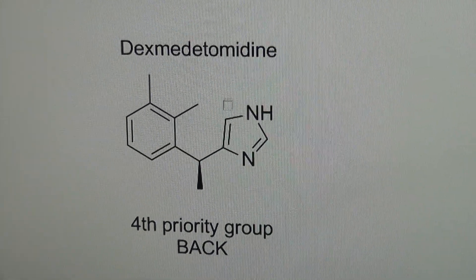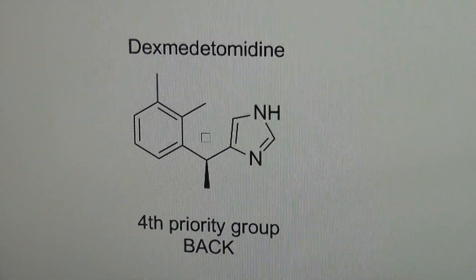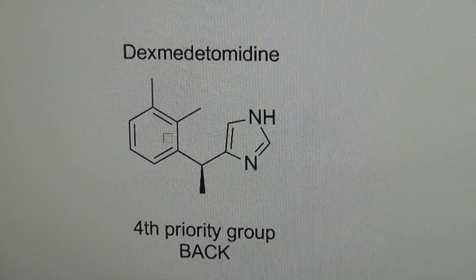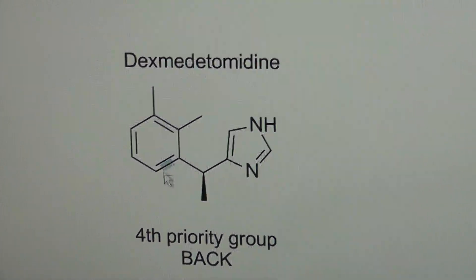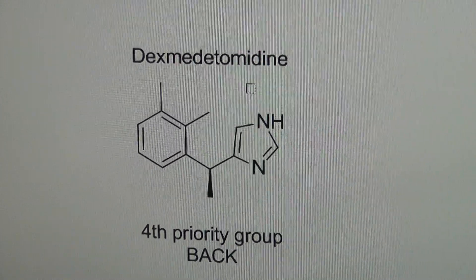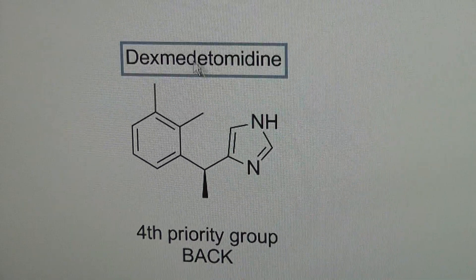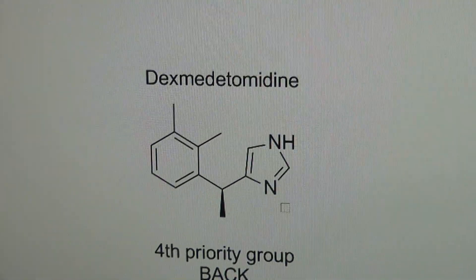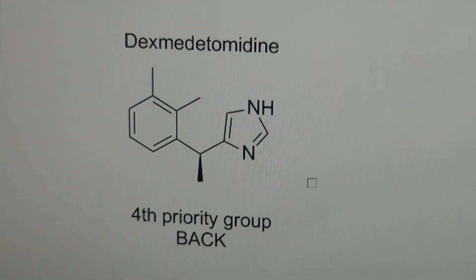Indeed, this functional group here — this substituent — is the top priority one. Second priority, third priority. We're moving in a counterclockwise direction, so this is S for dexmedetomidine. This 'dex' part has to do with the observed effects of this single enantiomer drug.